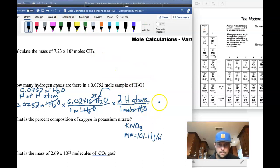We end up getting 9.05 times 10 to the 22nd hydrogen atoms.